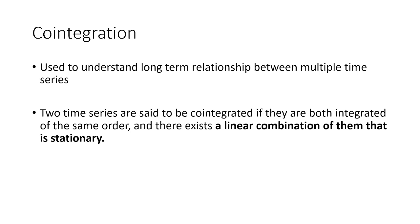Spurious correlation means correlation that cannot be explained logically and makes no sense. Therefore, co-integration was developed to simplify the process: you perform a linear regression, collect the residuals, and check whether the residuals are stationary or not. If the residuals are stationary, only then are the two time series considered to be genuinely related to each other.